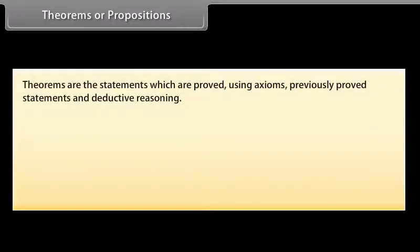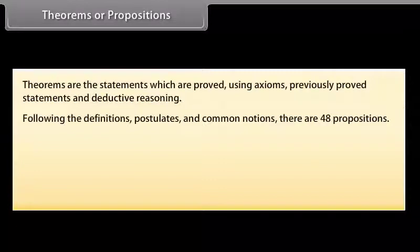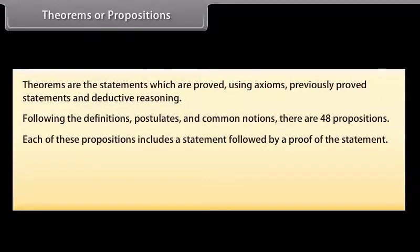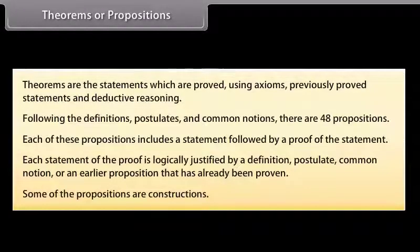Theorems are the statements which are proved using axioms, previously proved statements, and deductive reasoning. Following the definitions, postulates, and common notions, there are 48 propositions. Each of these propositions includes a statement followed by a proof of the statement. Each statement of the proof is logically justified by a definition, postulate, common notion, or an earlier proposition that has already been proven. Some of the propositions are constructions.